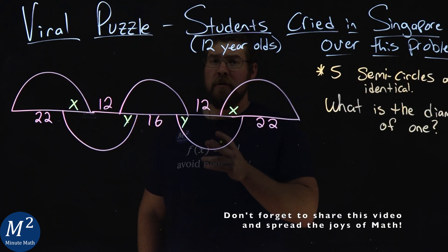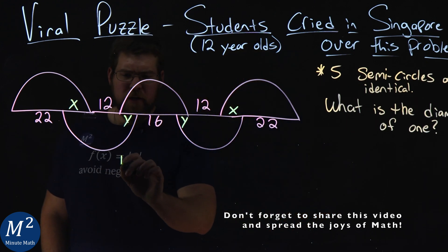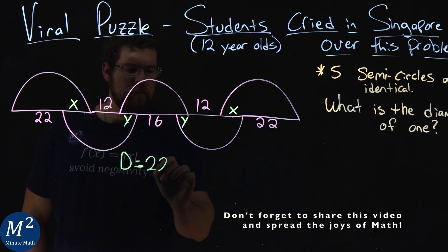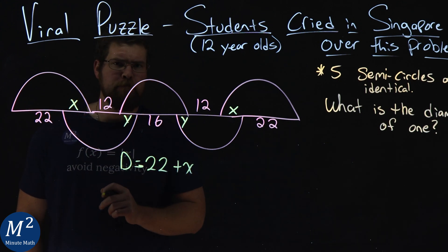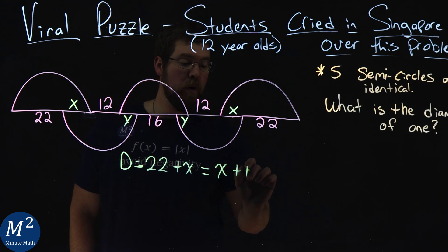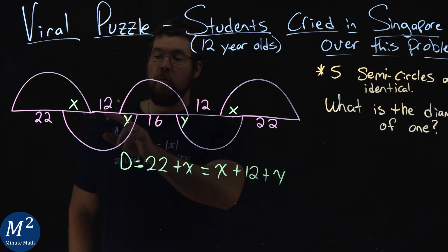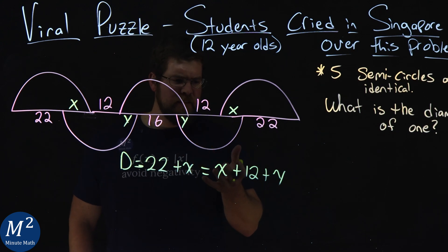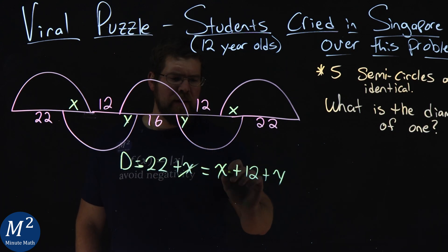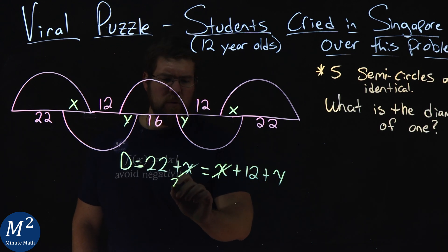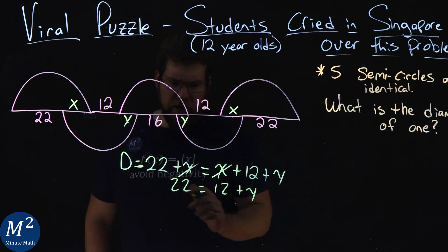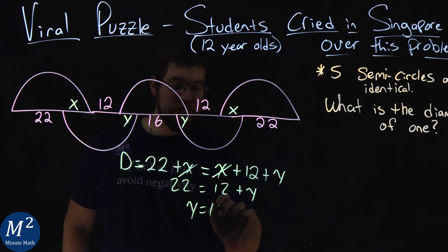So what is our diameter equal to? Well, our diameter here is equal to 22 plus an x, that length right here. Our diameter is also equal to an x plus a 12 plus a y here. Now let's go simplify this and see if we can get y really by itself. If I subtract an x to both sides, they cancel. And so I have 22 here equals 12 plus y. Subtract both sides by 12 and we get y is equal to 10.